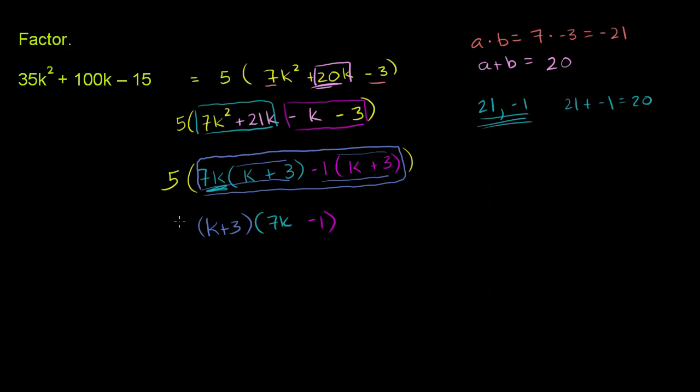And of course, the whole time, you have that 5 sitting outside. It's just 5 times k plus 3 times 7k minus 1. And we factored it. We're done.